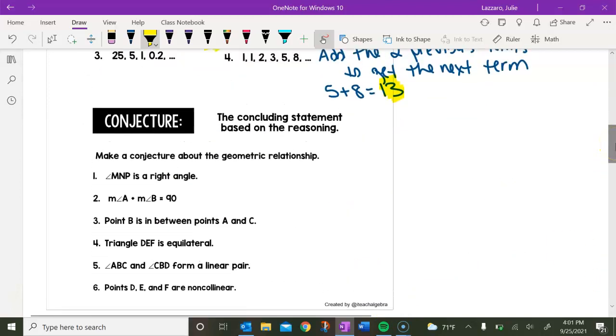All righty. Let's move on. So again, like we said earlier, a conjecture is a concluding statement based on the reasoning. So this is something that we are thinking is true based on the reasoning that we've done up until this point. So we want to make a conjecture about the geometric relationships stated here. So let's take a look at number three and number six together.